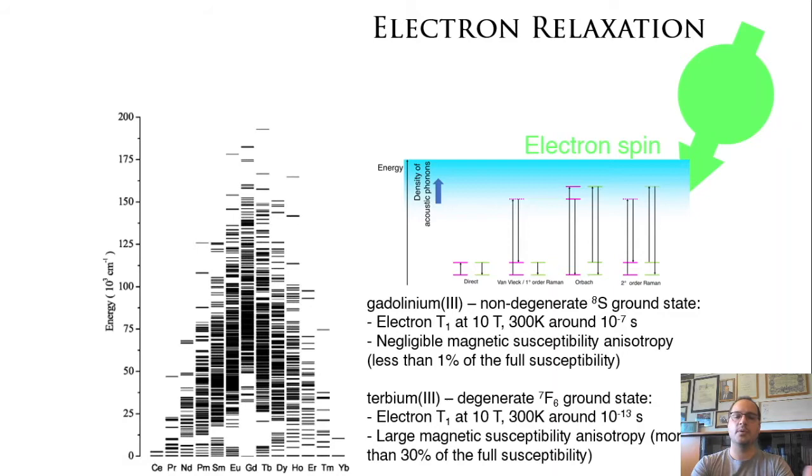So you can expect very slow relaxation. The electron T1 is of the order of 10 to the minus 6, 10 to the minus 7 seconds in high field at room temperature, and a negligible magnetic susceptibility anisotropy, which is usually a fraction of the full susceptibility.